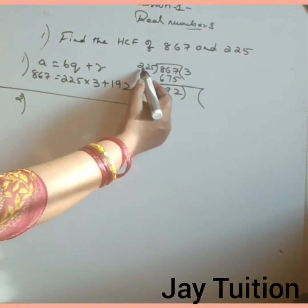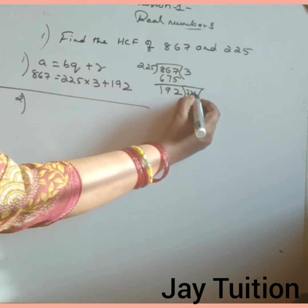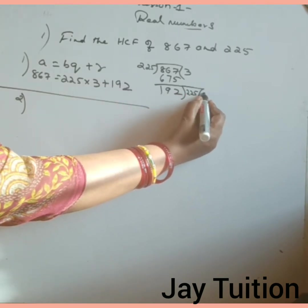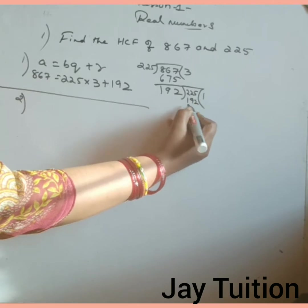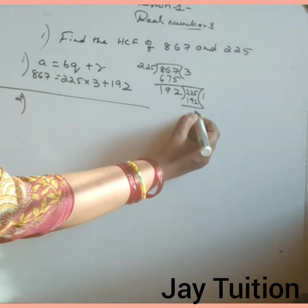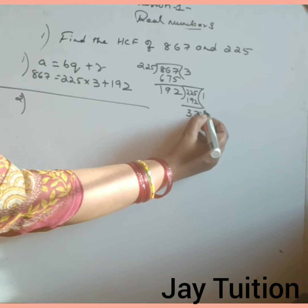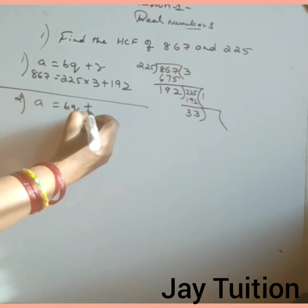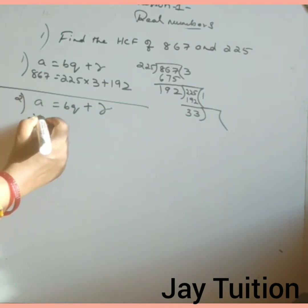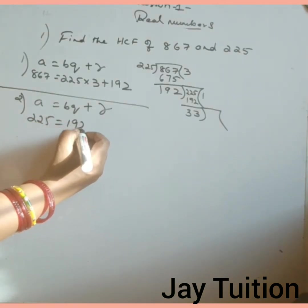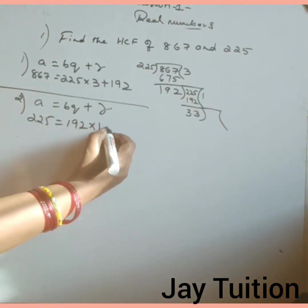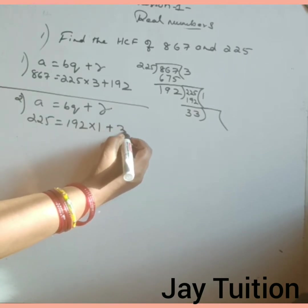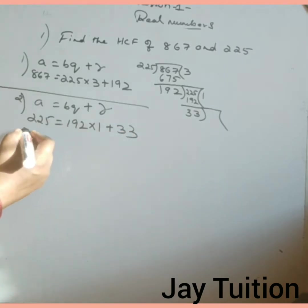Second step: 225 divided by 192 goes one time. If you subtract, you will get 33. Second step is over. A equals to BQ plus R: A is 225 equals to B is 192, Q is 1 plus R remainder is 33. If you multiply and add, you will get 225.